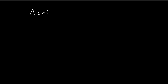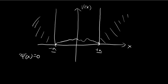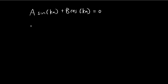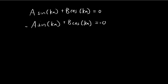Substituting x equal to positive a into our general solution: A·sin(ka) + B·cos(ka) = 0. Substituting x equal to negative a: taking the negative sign out of the sine function and noting cosine is even, we get −A·sin(ka) + B·cos(ka) = 0. These two equations represent the continuity requirements that our ψ(x) must satisfy.